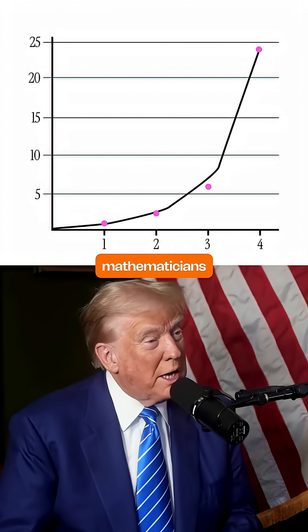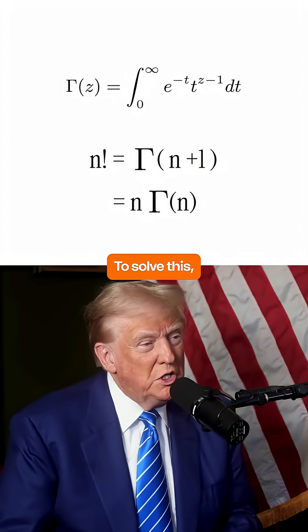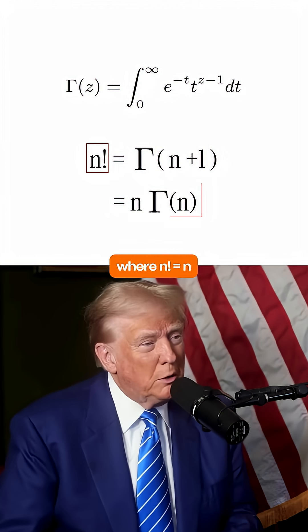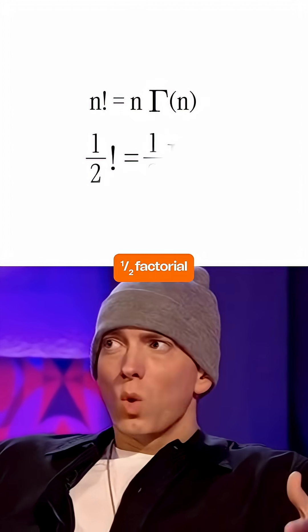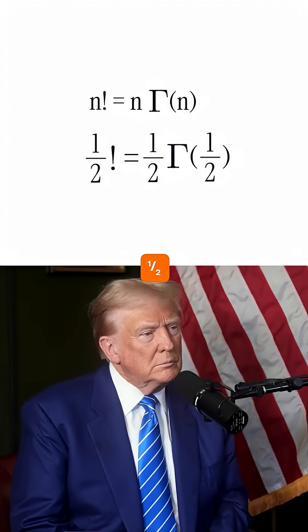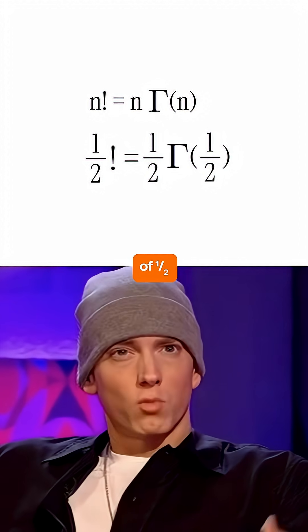Exactly the problem mathematicians faced. To solve this, they invented the gamma function where n factorial equals n multiplied by gamma function of n. So according to that, 1 by 2 factorial would be 1 by 2 multiplied by gamma function of 1 by 2.